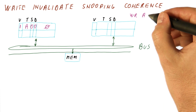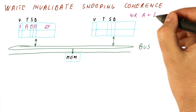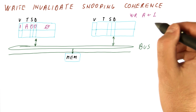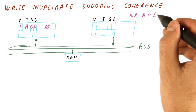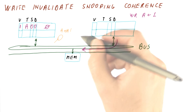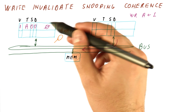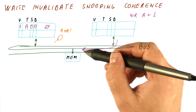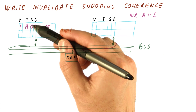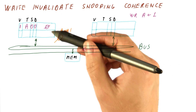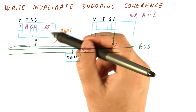Now suppose we have a write to A, writing one to it. We have a cache miss and broadcast the write. We don't need to broadcast the value with it, because the other caches don't need this value. As we send this to the bus, it's going to be snooped by the other cache, which sees that somebody is trying to write to the block it has. In a write update protocol, we would need the value to update here.